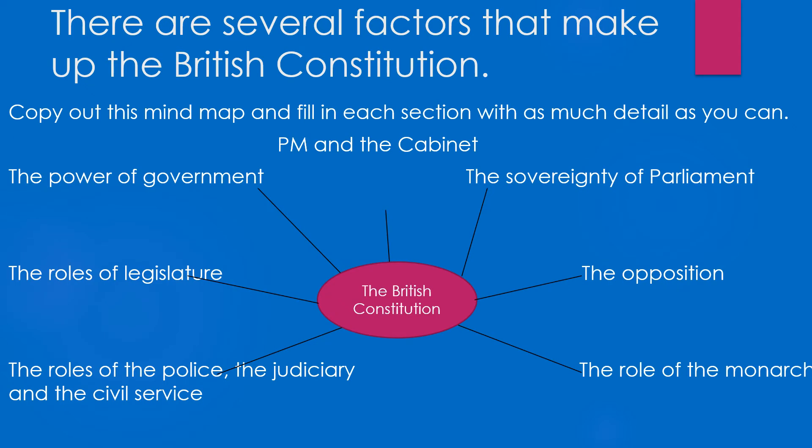So the different factors that make up the British Constitution: we've got the Prime Minister and the cabinet, like we've just said. All the others we're going to go through and look at what they mean. You do need to be aware of what they are and what they're there for.